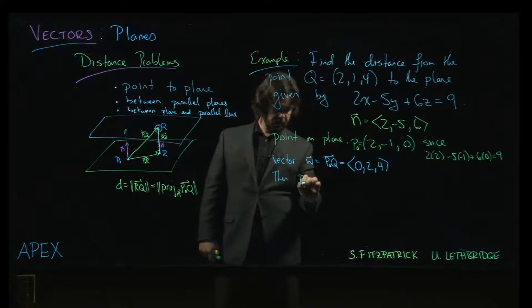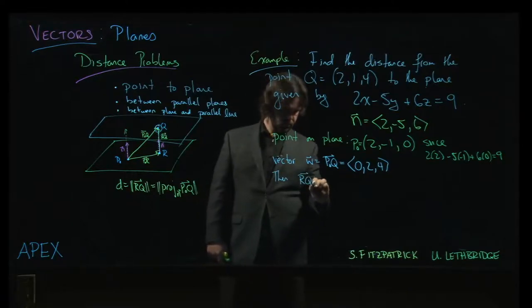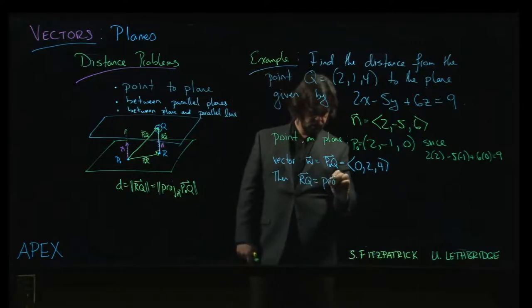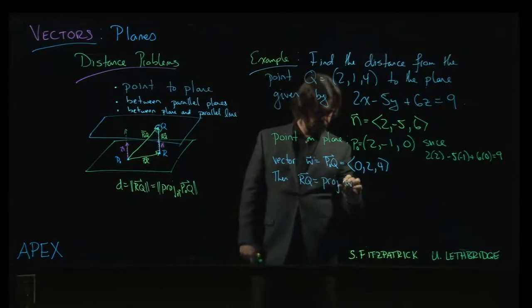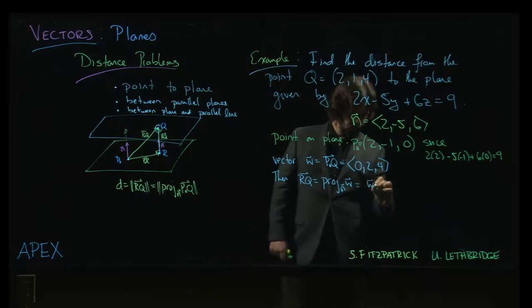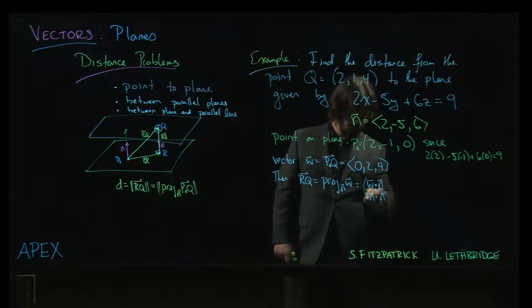Now we want the vector from r to q. That's the projection of w onto n, so that is w dot n over n dot n times n.